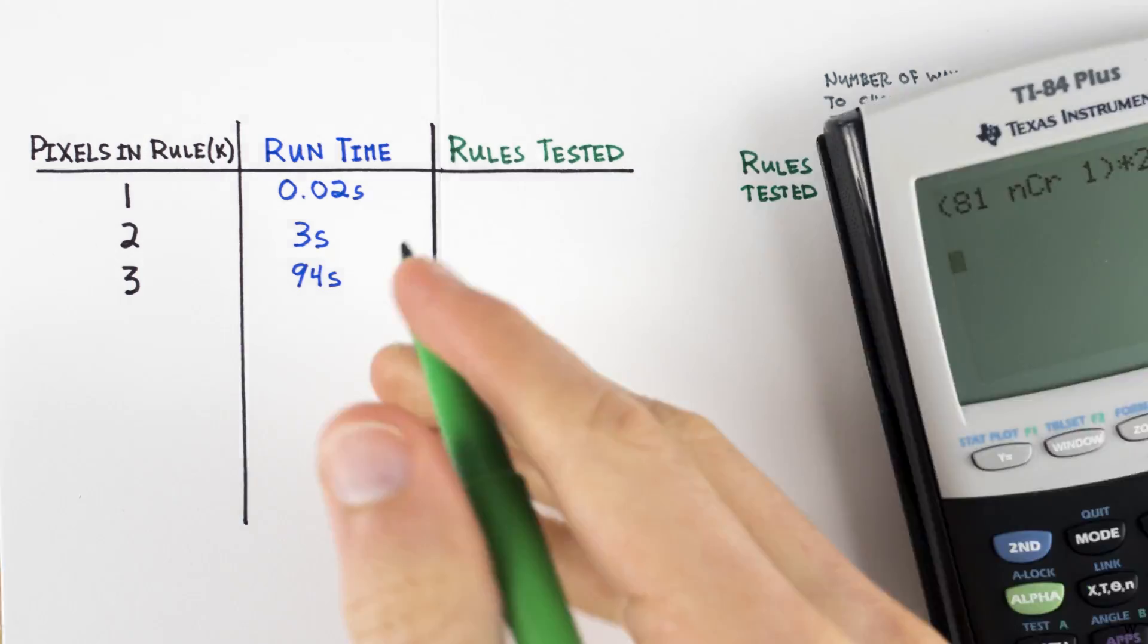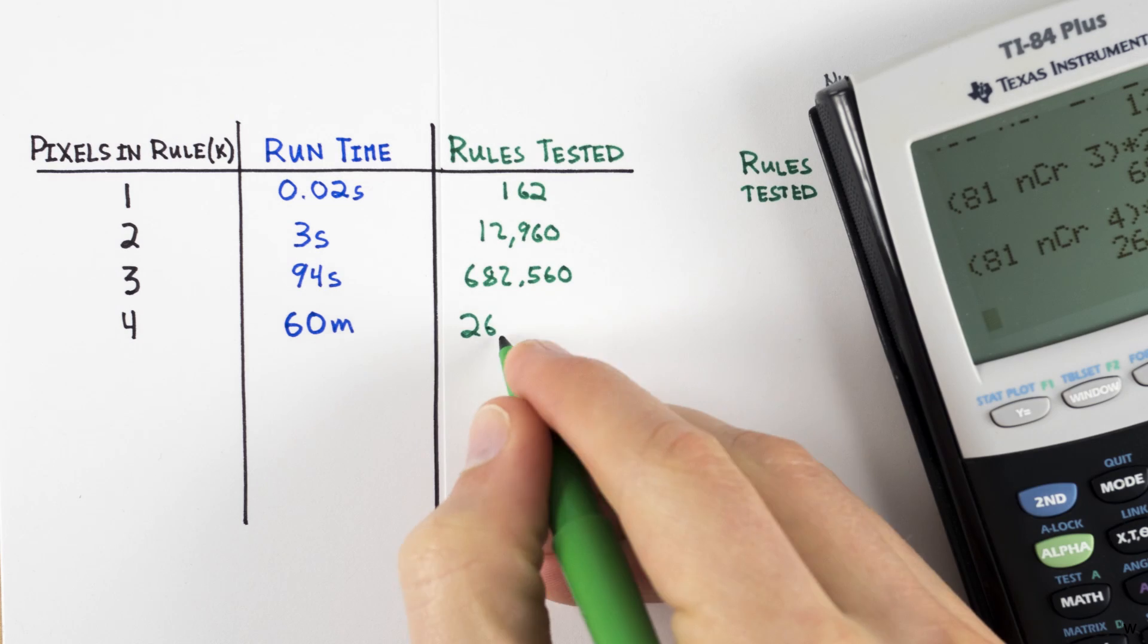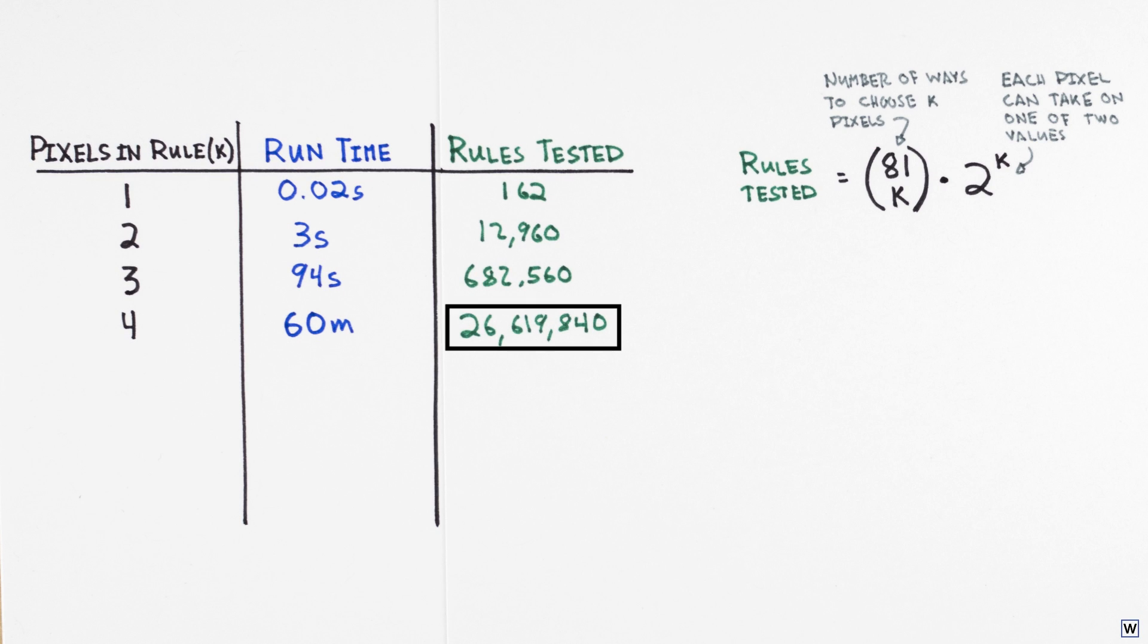We can now see exactly why our 4 pixel rule took so long to find. We had to search through over 26 million rules. And what's even more troubling is what happens as we continue to increase k.